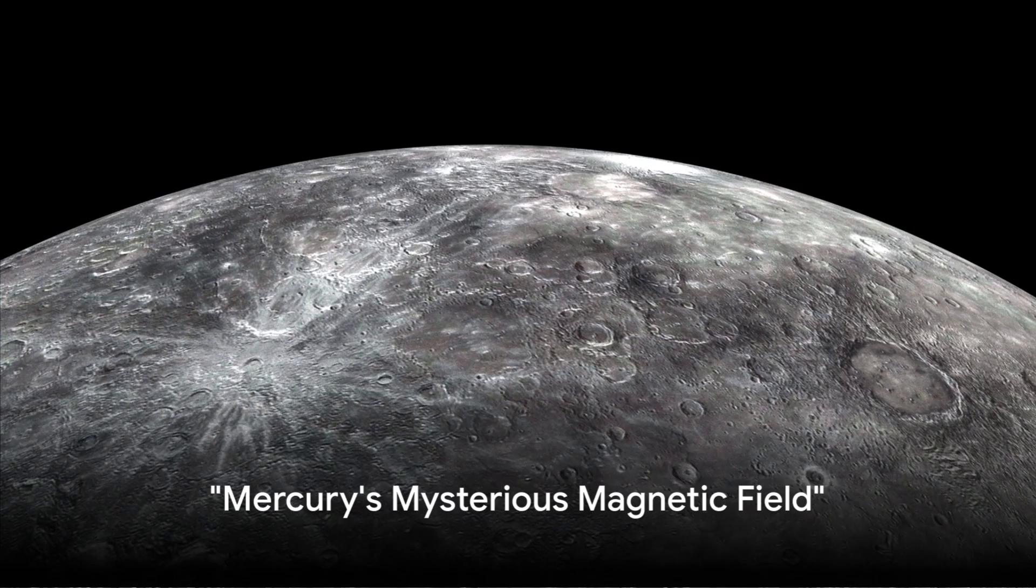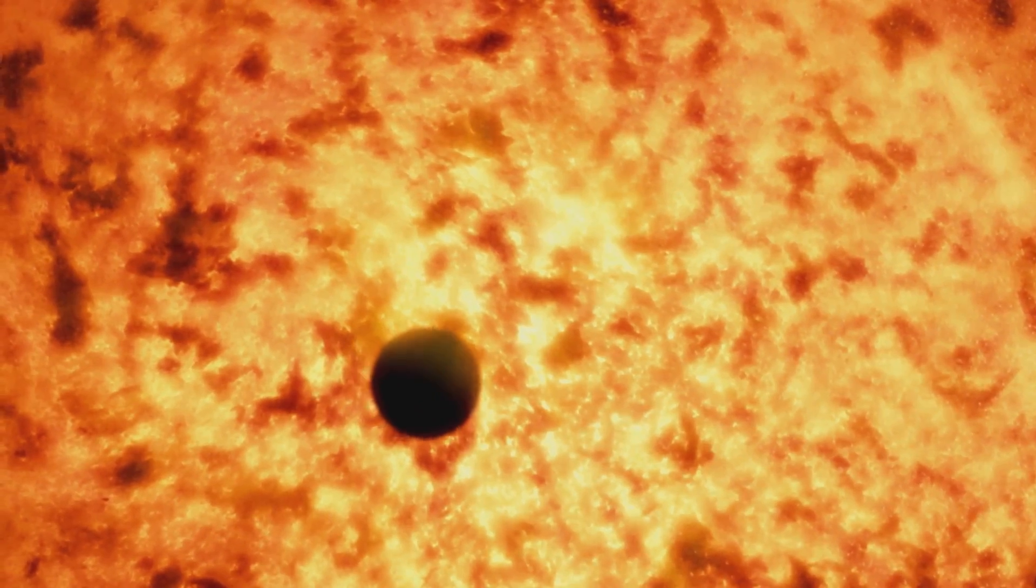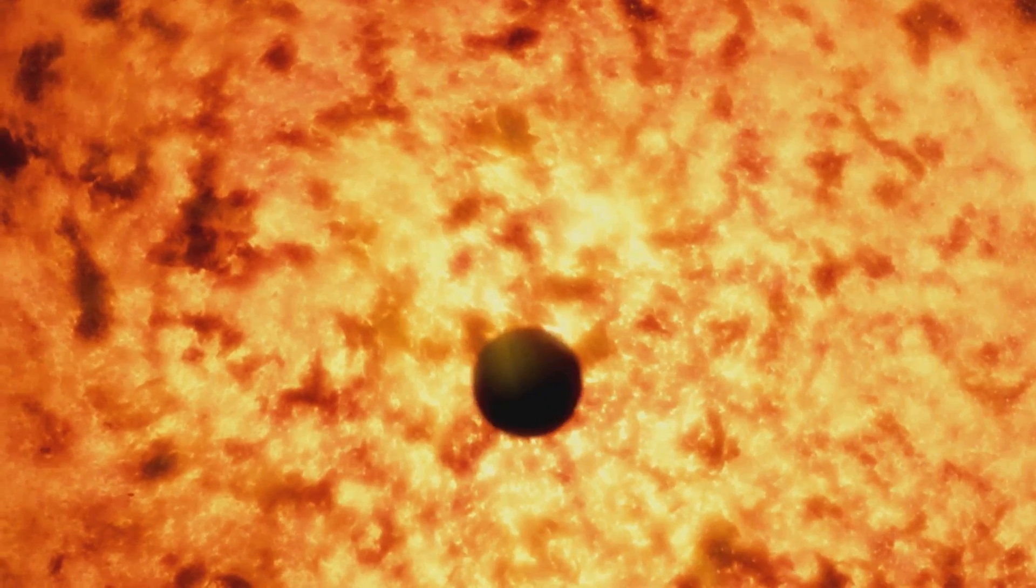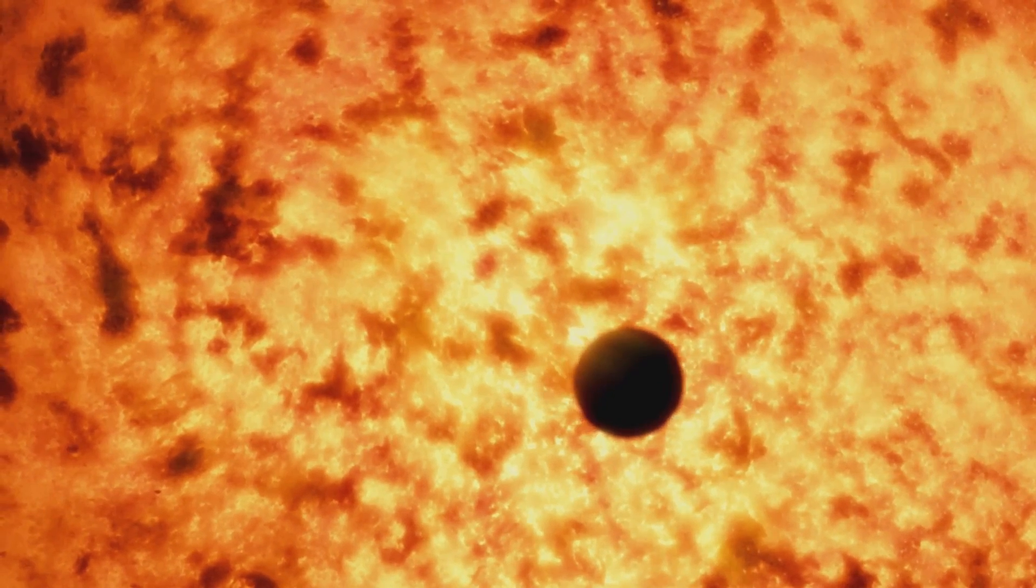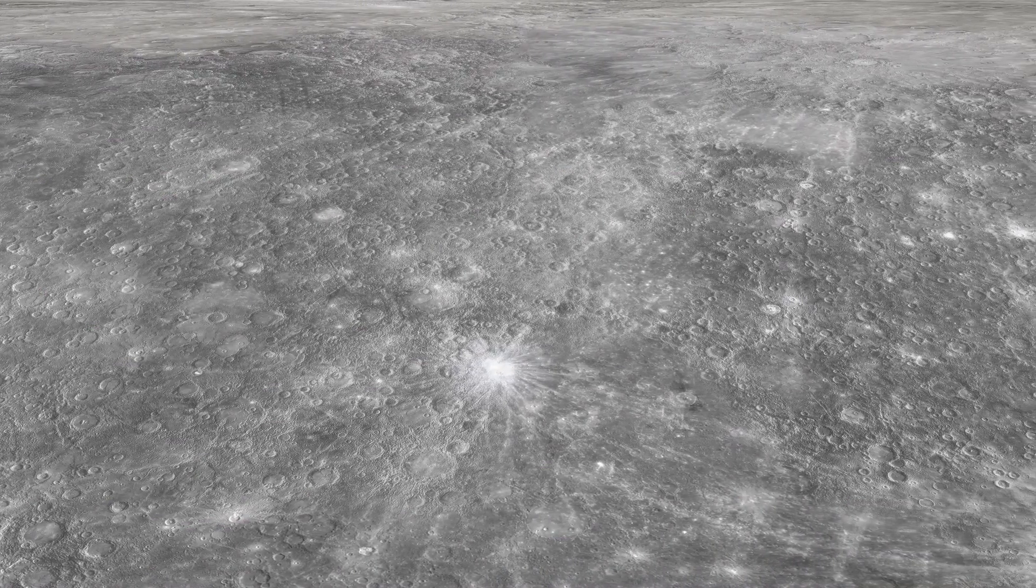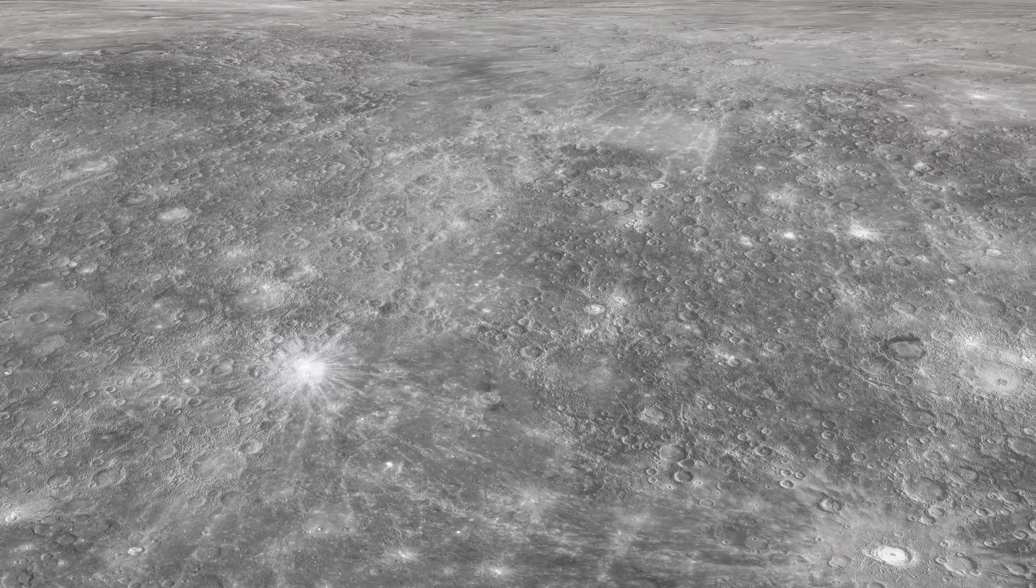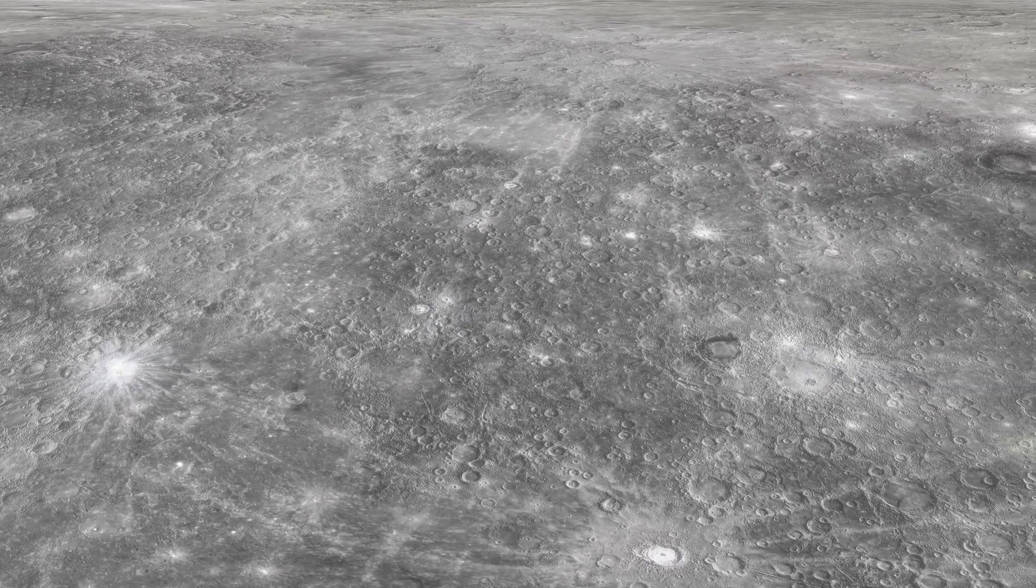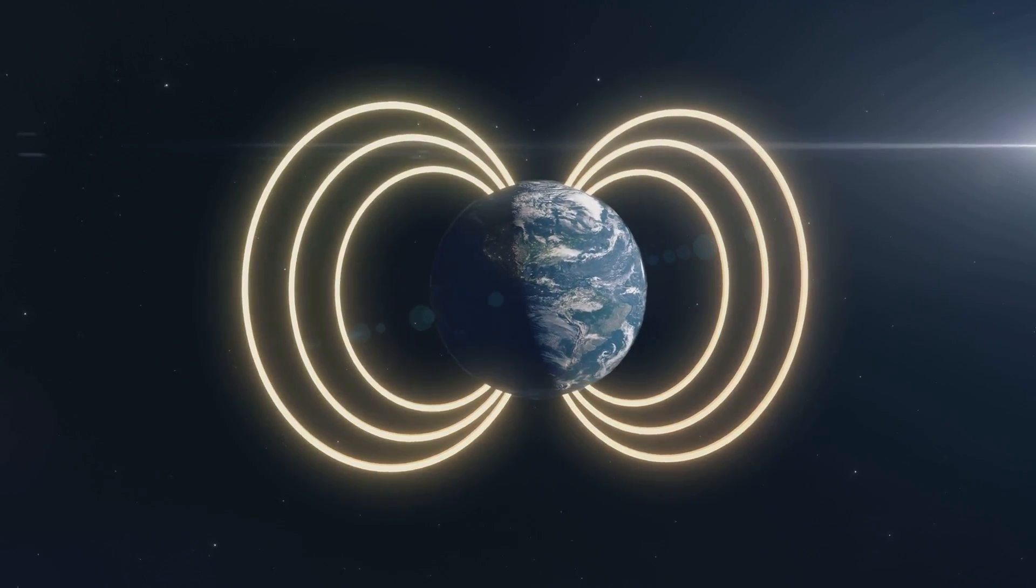Mercury holds yet another surprise, a magnetic field that shouldn't exist. You see, most celestial bodies, including our Earth, owe their magnetic fields to a process called dynamo effect. This process requires the celestial body to have a molten core and to rotate at a significant speed. But here's the catch. Mercury, the smallest planet in our solar system, rotates very slowly and is so tiny that its core should have cooled and solidified billions of years ago. Yet, against all odds, Mercury has a magnetic field.